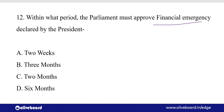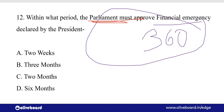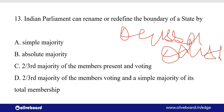अगर Financial Emergency लगती है — जो कि होती है Article 360 में — अभी तक India में ये कभी नहीं लगी है। परन्तु यदि ये लगती है, तो Parliament को 2 months में इसे approve करना पड़ेगा। Indian Parliament को Rename और Redefine the Boundary of a State — किसी भी state का अगर नाम change करना है जैसे Odisha का नाम change किया, या उसकी boundaries को redefine करना है — इसके लिए Simple Majority चाहिए होती है।